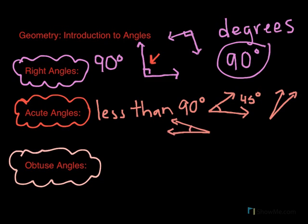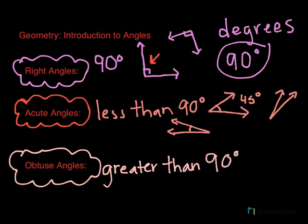And finally, at the bottom, we have obtuse angles. And obtuse angles are greater than 90 degrees. So a right angle is kind of a benchmark angle for you. So if you know your 90 degree angles, that helps you be able to identify acute and obtuse.